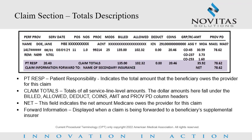Claim section totals descriptions. PT RESP indicates the total amount that the beneficiary owes the provider for this claim. Claim totals provides the totals of all service line level amounts; the dollar amounts fall under the billed, allowed, deductible, coinsurance, amount, and provider paid column headers. Net indicates the net amount Medicare owes the provider for this claim. Some claims show the claim information forwarded to field, displayed when a claim is being forwarded to a beneficiary supplemental insurer, with the supplemental insurer's name usually appearing in this field.